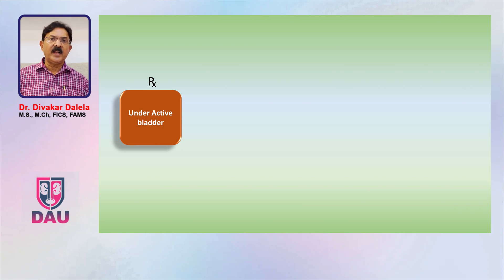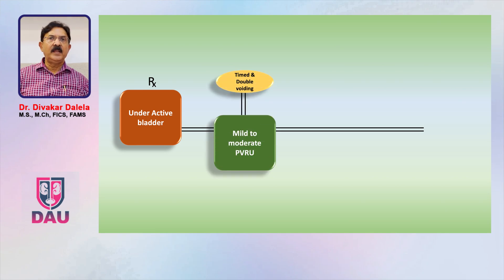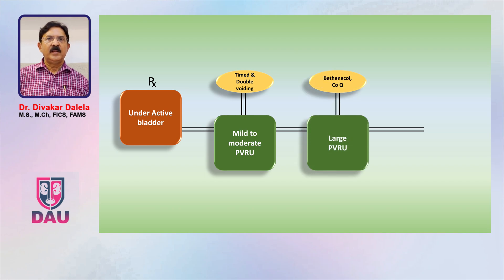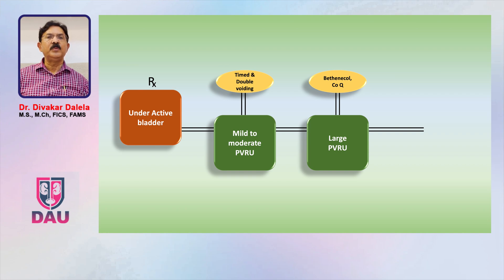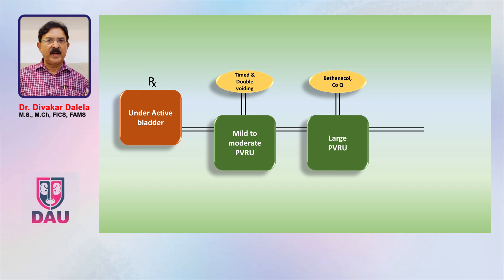If the patient comes with underactive bladder and symptoms are at an early stage, with only mild to moderate residual urinary volume, these patients can be given timed voiding and double voiding techniques and do fine. But if there is a large post-void residual, in addition to the former approach, bethanechol or coenzyme Q may be added — some patients respond to bethanechol, not all, likely due to individual differences in metabolic profile.